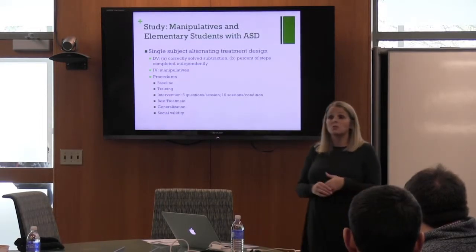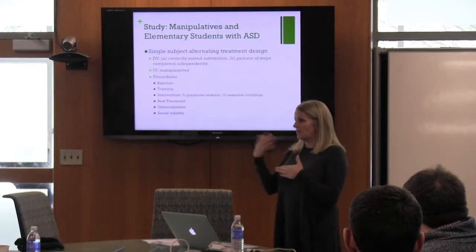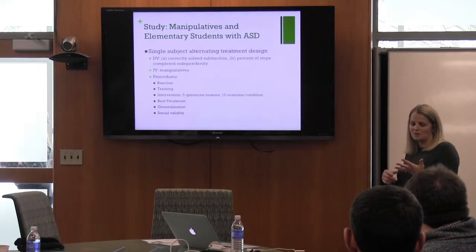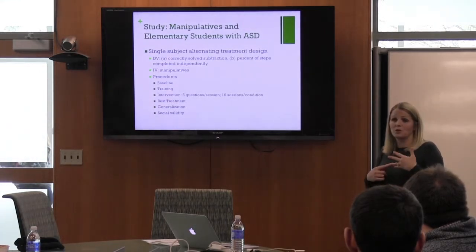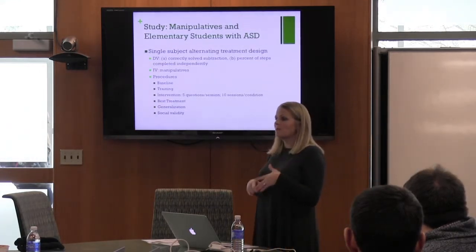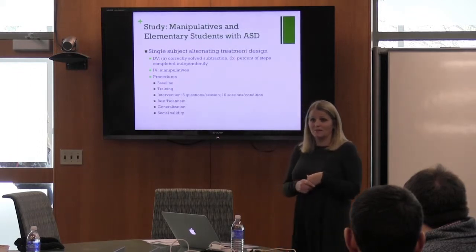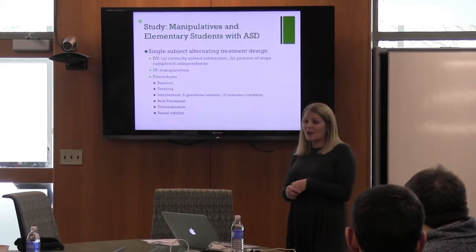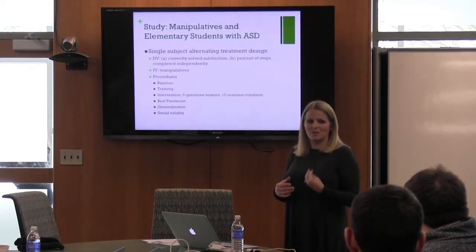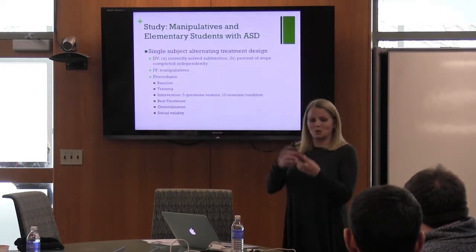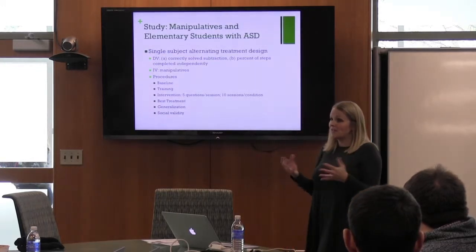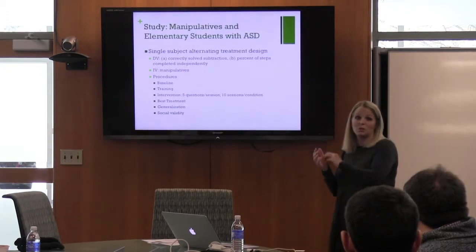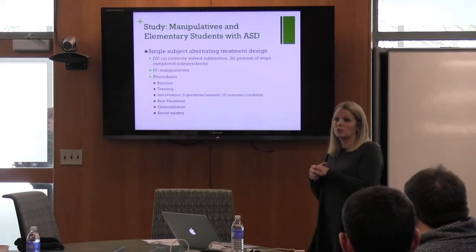After the alternating treatment phase, we identified a best treatment — which intervention condition was most effective — to see if they could maintain that when just receiving that condition. Then we looked for generalization. For the concrete manipulatives, we used a token economy — students had to exchange actual tokens to get a reward, connecting the mathematics to what they typically did. For the virtual, they had to set up the problems themselves, and in generalization they had to set up all the blocks independently.